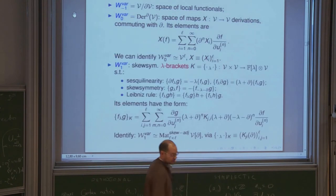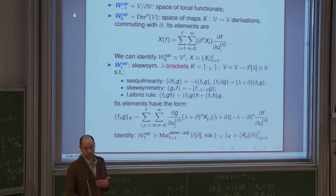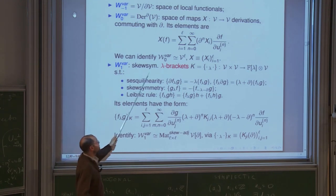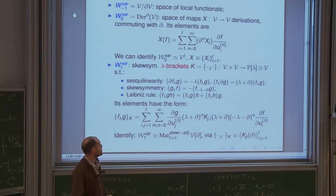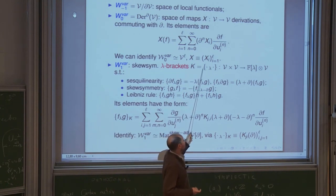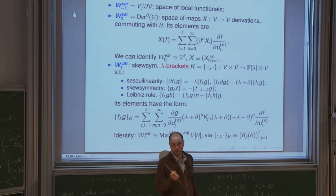Each evolutionary vector field is associated to a characteristic xi which is an element of V^l, so we can identify evolutionary vector fields with elements of V^l. The next space W^1 consists of elements associated to skew-symmetric lambda brackets on V: these are like skew-symmetric brackets but with images in polynomials in lambda with coefficients in V.